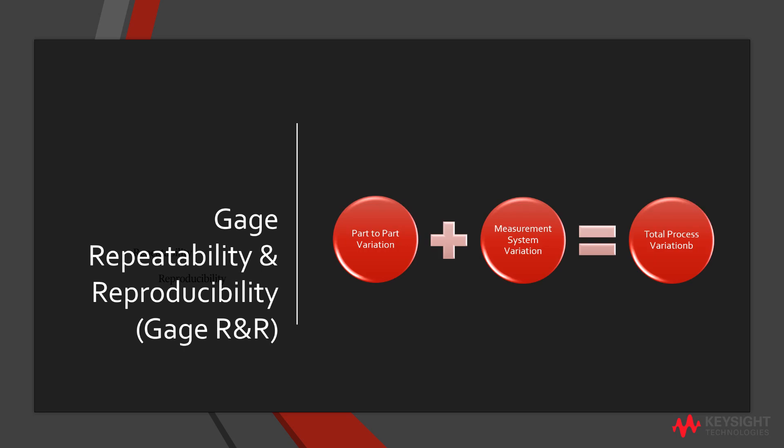The total process variation consists of part-to-part variation and measurement system variation. The part-to-part variation measures the components and devices, and the measurement system variation measures the measuring instrument. There are two ways to perform a gauge R&R study.